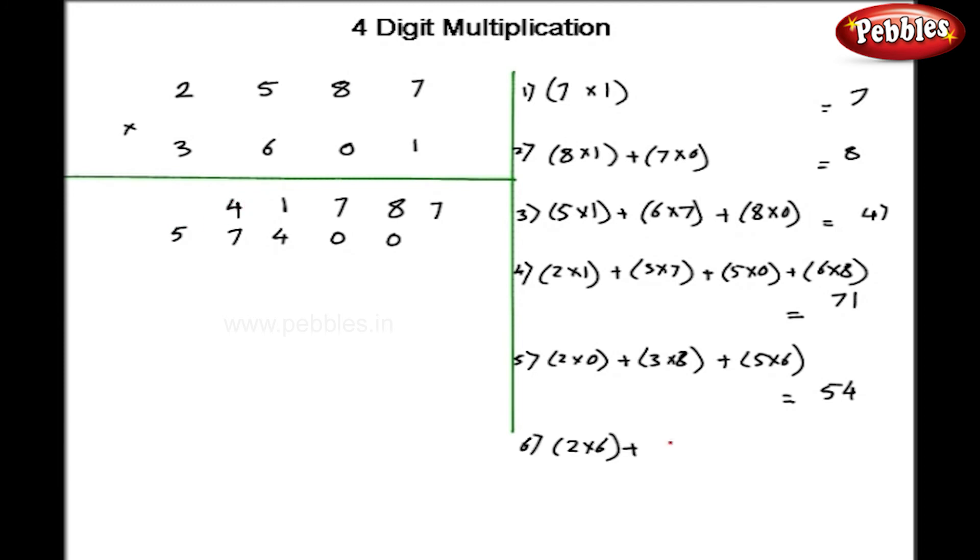As a next step, I will do 2 into 6 plus 3 into 5. Here, my answer is 27. 2 is carry over here.